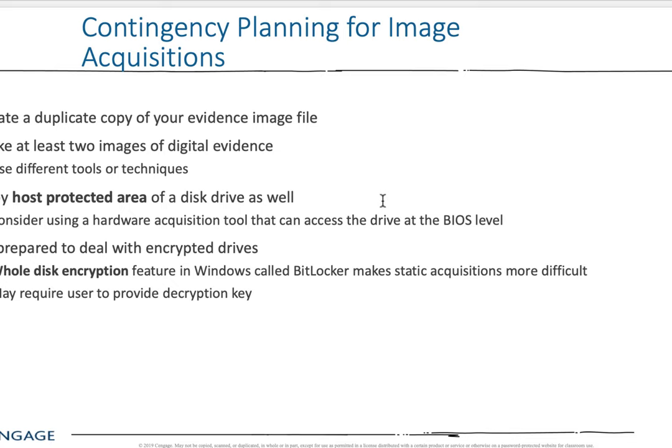Contingency planning for image acquisitions: make at least two digital images of evidence. Copy the host-protected area of a disk drive as well — read about that. You want to replicate the entire environment if necessary, store copies of those images, and document that. Whole disk encryption — read about that. BitLocker, for example, is whole disk encryption. What are you going to do if you run into that situation? There are some tips in the book.